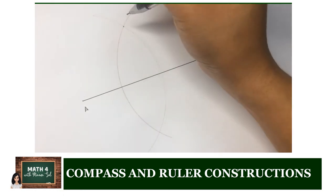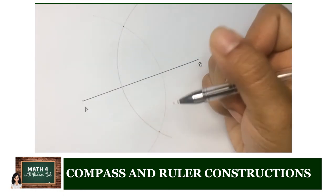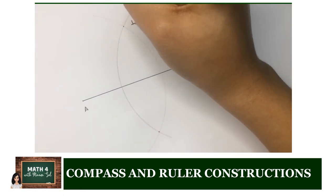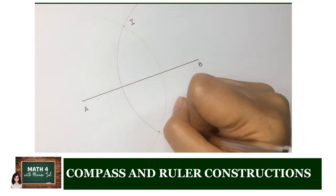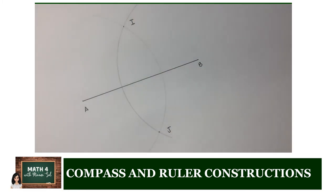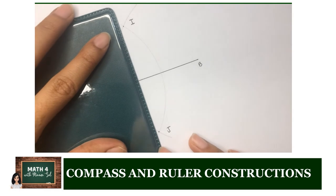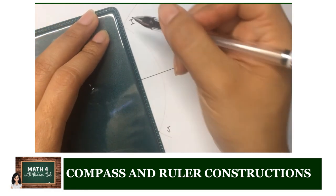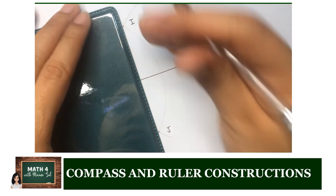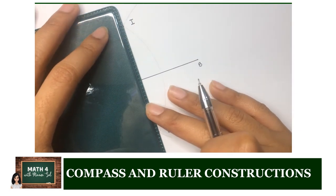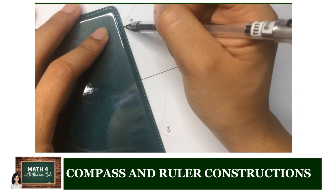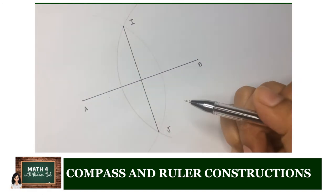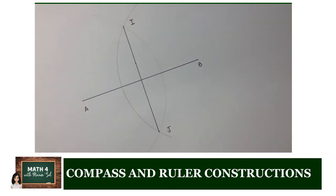We locate the points of intersection between these two arcs and name them point I and point J. Next, we use a straight edge to connect segment IJ. We need to be very precise with this as much as we can. And now we have segment IJ, the perpendicular bisector of segment AB.